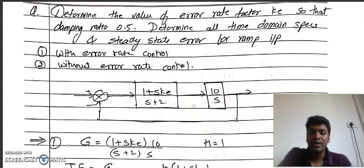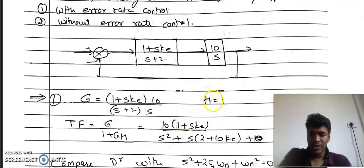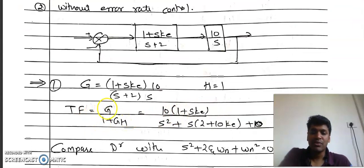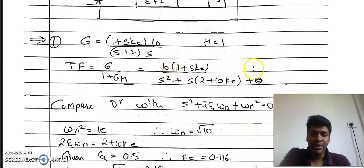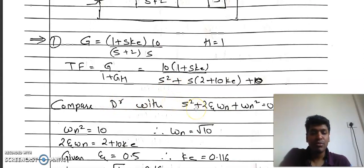We will find the transfer function. G = (1 + s·ke)/(s+2) · 10/s, and H = 1 (unity feedback). The closed loop transfer function is G/(1+G·H). Substituting the values, you get a quadratic equation in the denominator, which we compare with the standard form s² + 2ζωn·s + ωn².